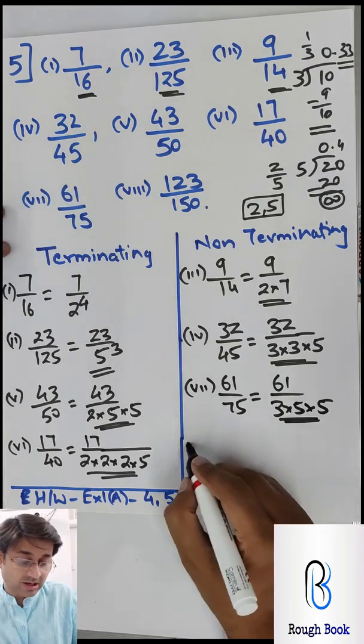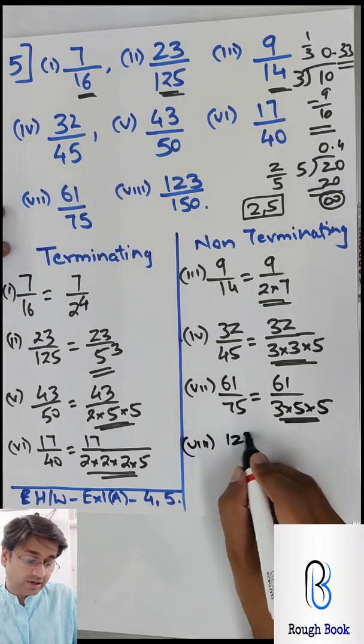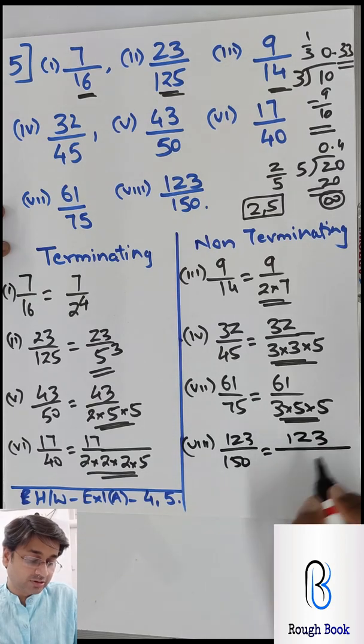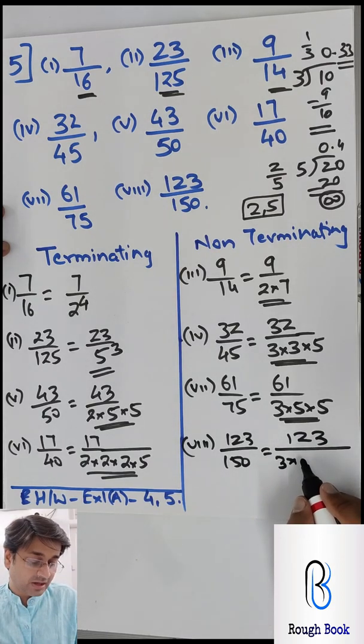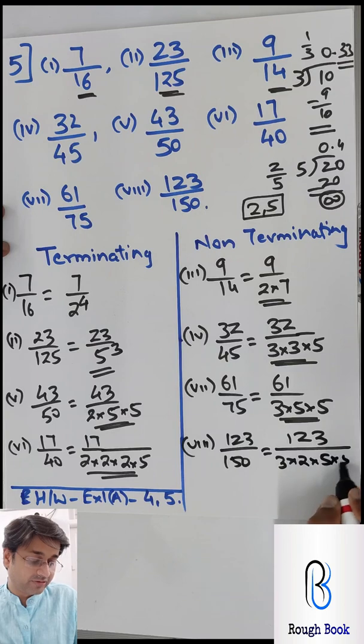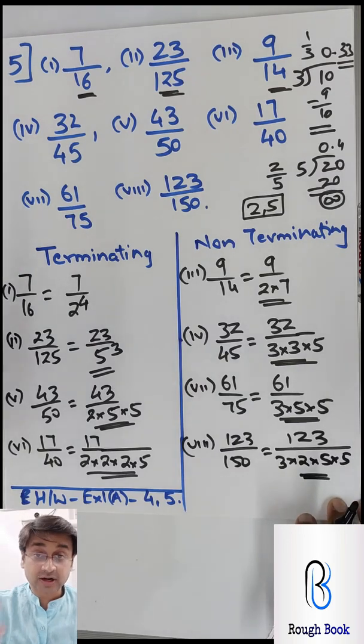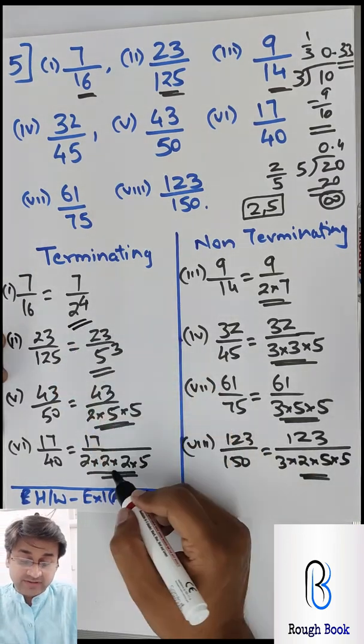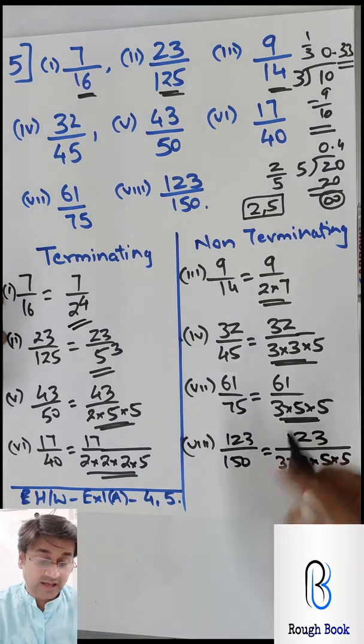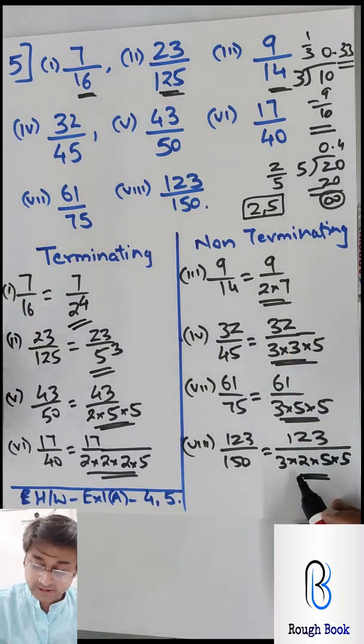Anything apart from 2 and 5, non-terminating. 17 by 40, again it's going to be here. Why? Because 40 is basically 2 into 2, 4, 8 into 5. So non-terminating. Then 61 by 75 - 75 has 3 in it. So 61 by 75, that will be 3 into 5 into 5, and therefore non-terminating. 150 also has 3 in it. So 1, 2, 3 by 150, so I can say 1, 2, 3 by 3 into 50. 50 is 2 into 5 into 5, and therefore non-terminating. So do you understand? Only 2's and 5's in the denominator, terminating. Anything apart from 2 and 5, non-terminating.